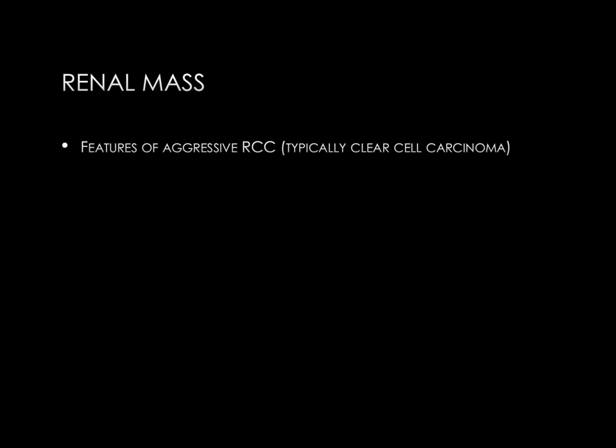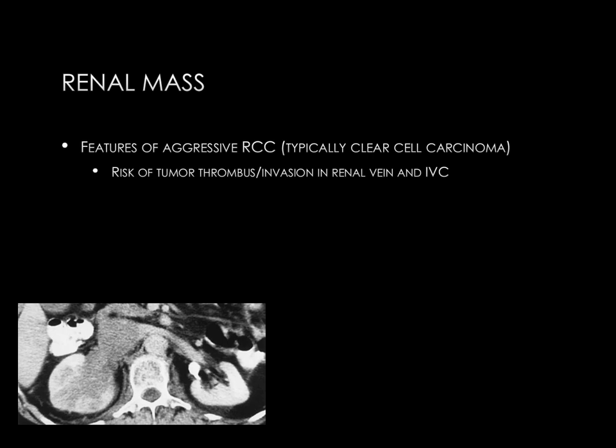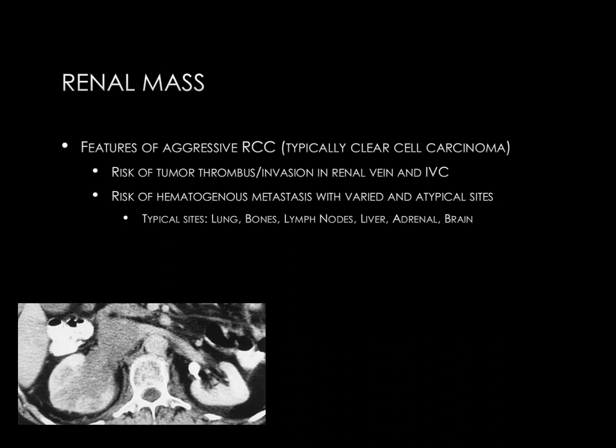Some imaging features of aggressive renal cell carcinoma — again most commonly representing clear cell carcinoma — include a risk of tumor thrombus or tumor invasion into the renal vein and IVC. On the slide, there is an infiltrative right renal mass with loss of the renal sinus fat on the right; the mass extends into the renal vein and IVC, which is enlarged with hypodense tissue. There is also a risk of hematogenous metastases. Typical sites include lung, bones, lymph nodes, liver, adrenal glands, and brain.